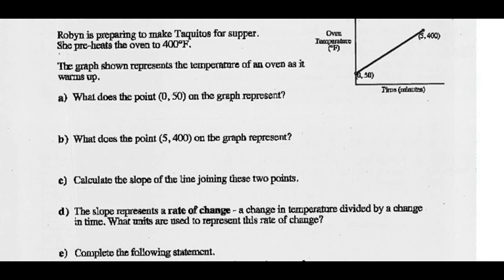What does the point (0, 50) on the graph represent? At time 0, we get a temperature of 50 degrees Fahrenheit. So you should say this is the initial temperature of the oven.